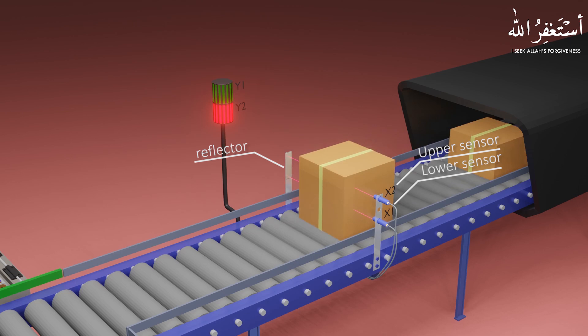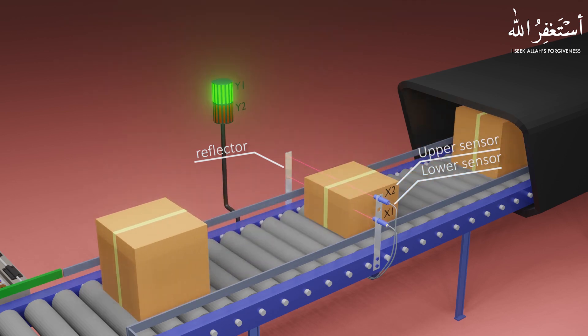When a large box comes in front of the sensors, both sensors X1 and X2 beams will cut. On the other hand, when a small box comes in front of these sensors, only the X1 sensor detects the box and gives an output signal at the PLC input X1.